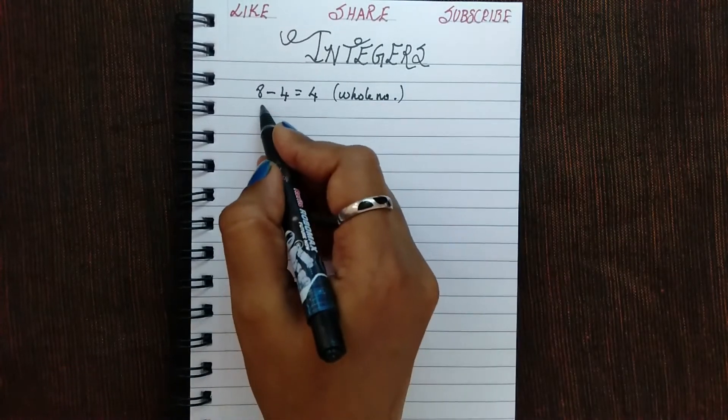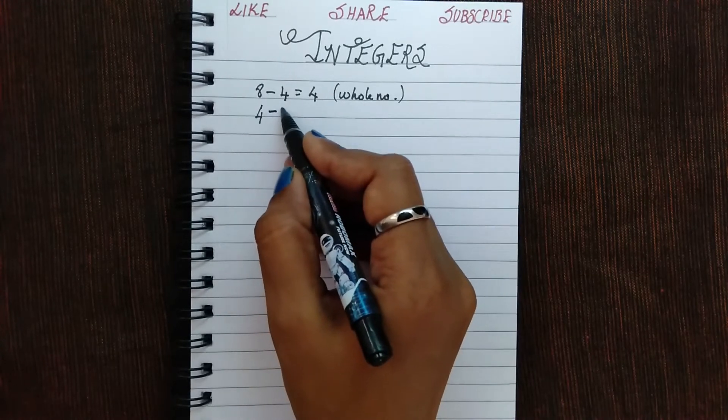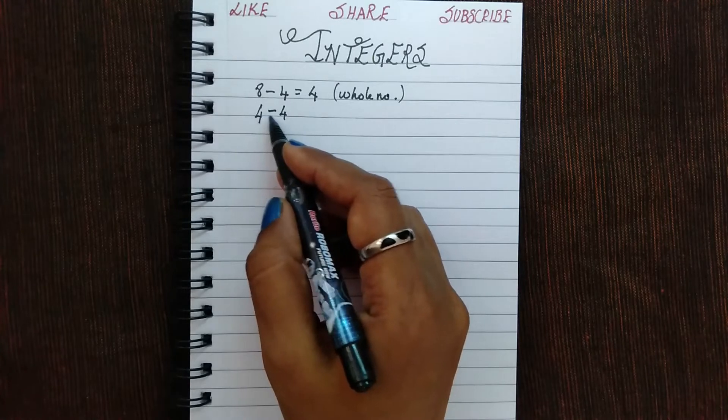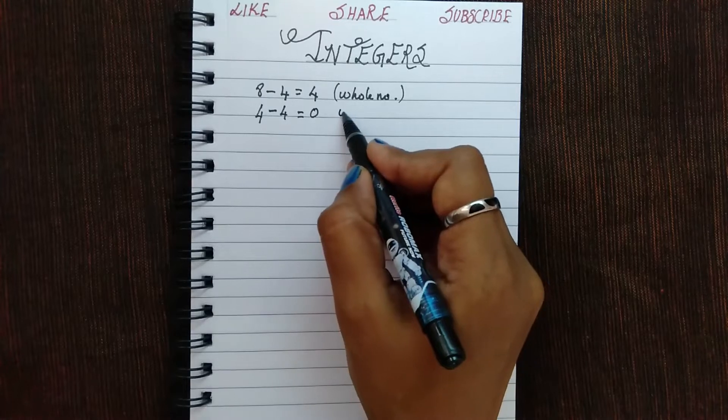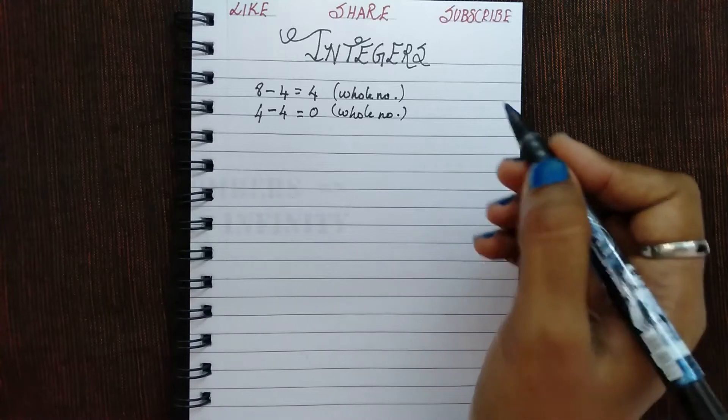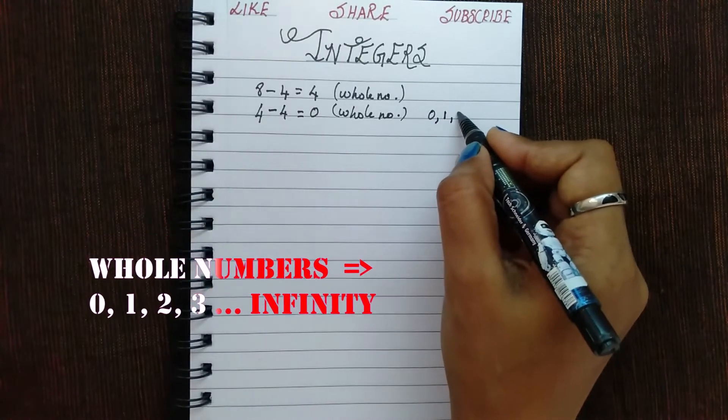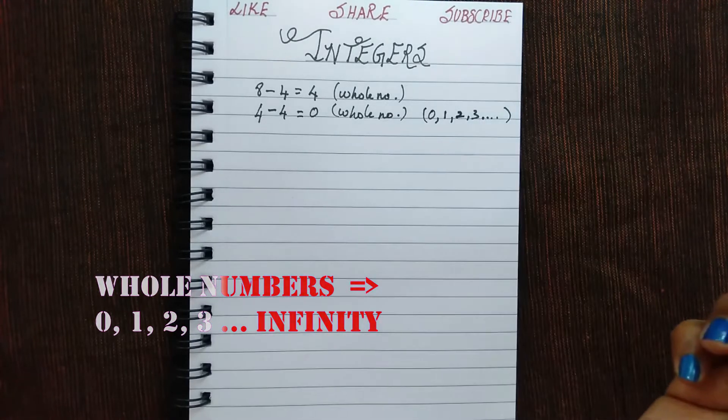Now let's take this 4 here. Let's subtract the same number from 4, so you are subtracting the number of the same value. You are getting 0. 0 again is a whole number. Now what are these whole numbers? As you all know, from 0 the numbers 1, 2, 3, 4 and so on are called whole numbers.